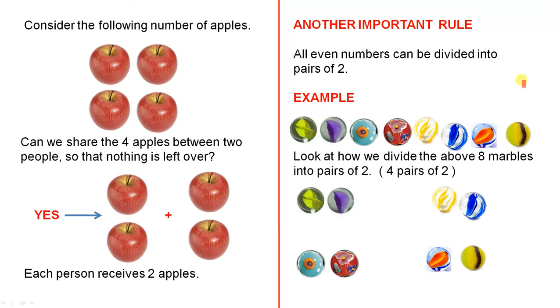Consider the following number of apples. Can we share the four apples between two people so that nothing is left over? Yes, one person gets two and the other person gets two. Each person receives two apples. There is nothing left over. So four is an even number.